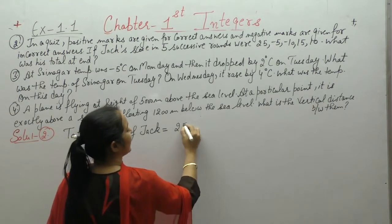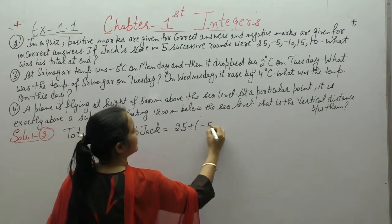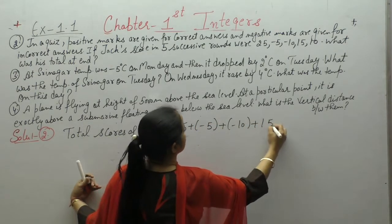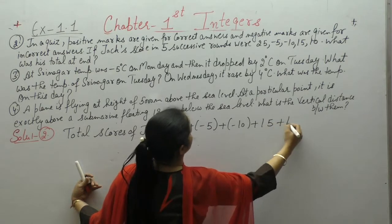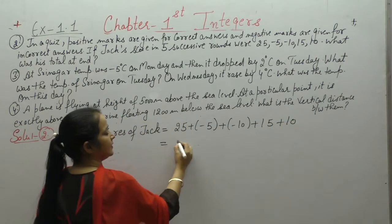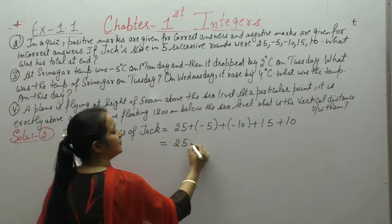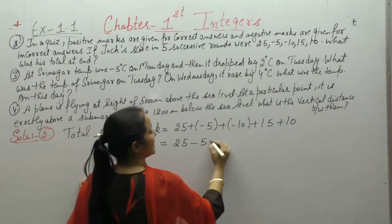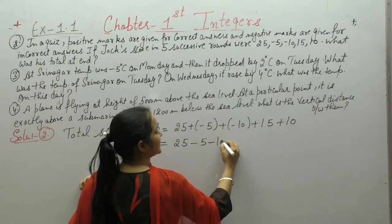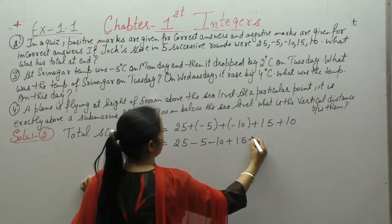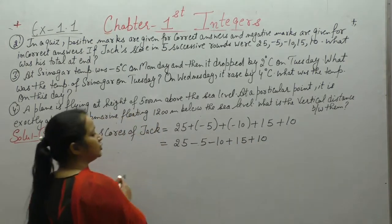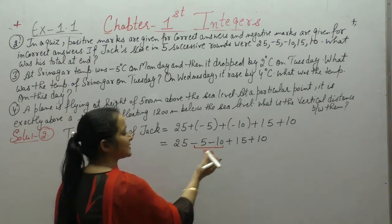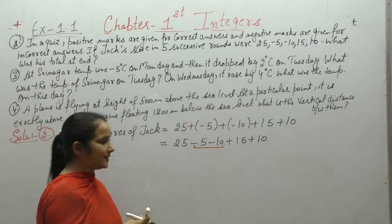25 plus minus 5, plus minus 10, plus 15, plus 10. The negative terms can be added separately — their sign will carry over as negative.